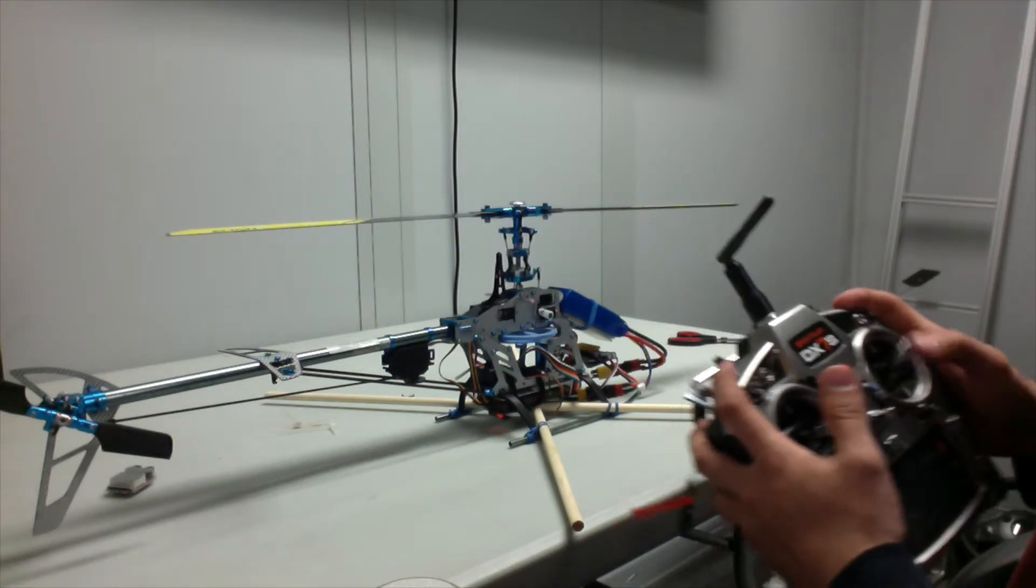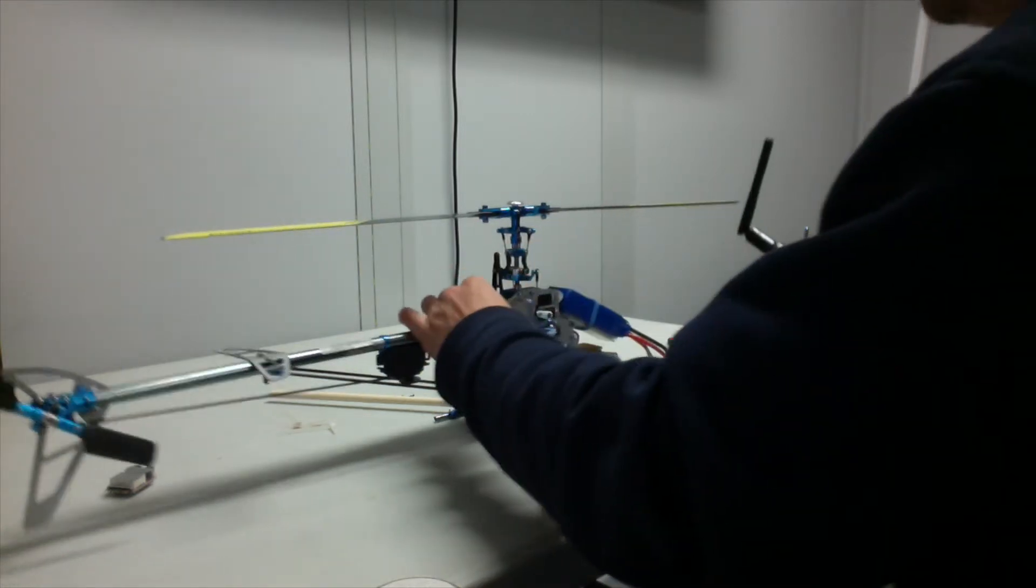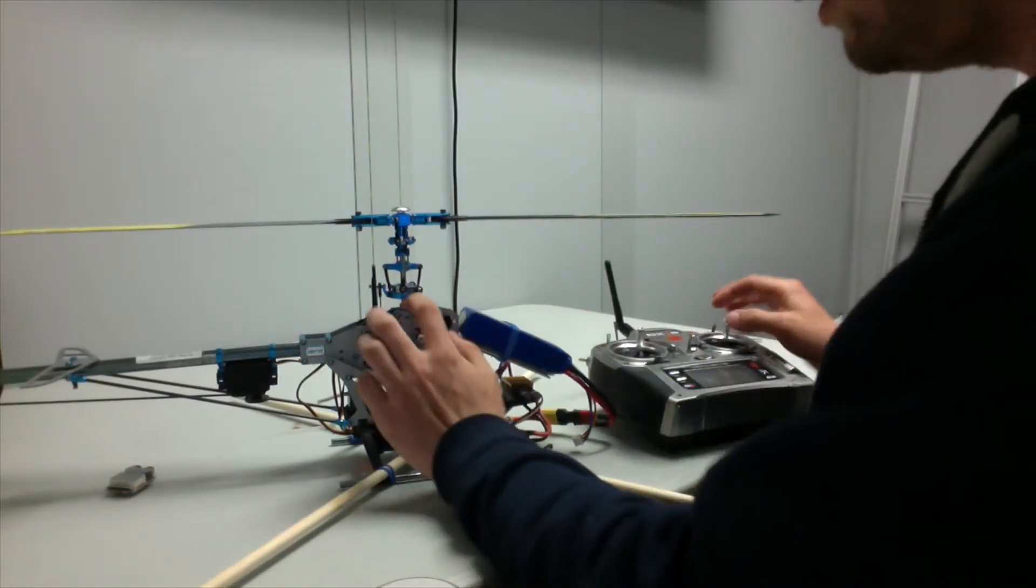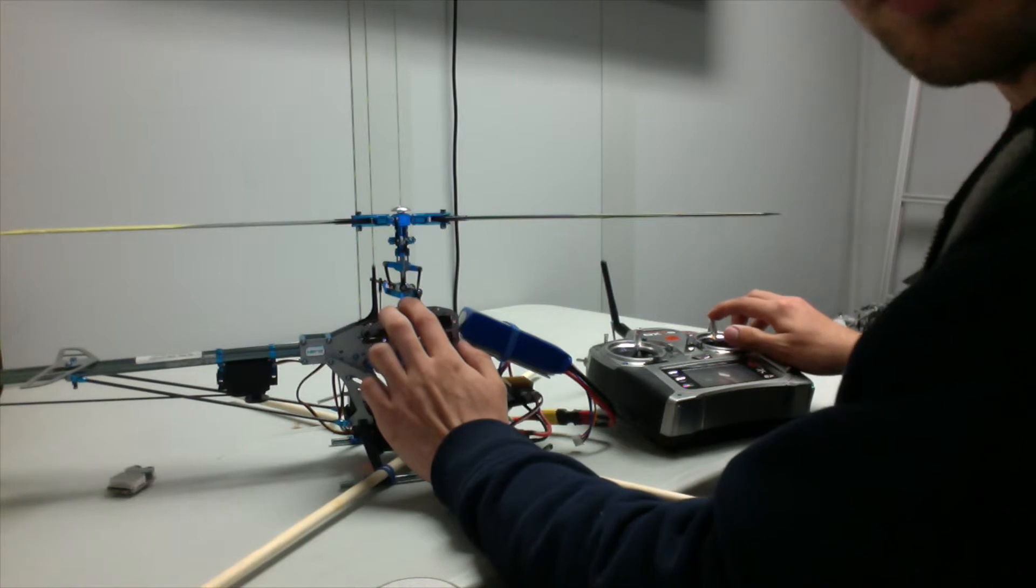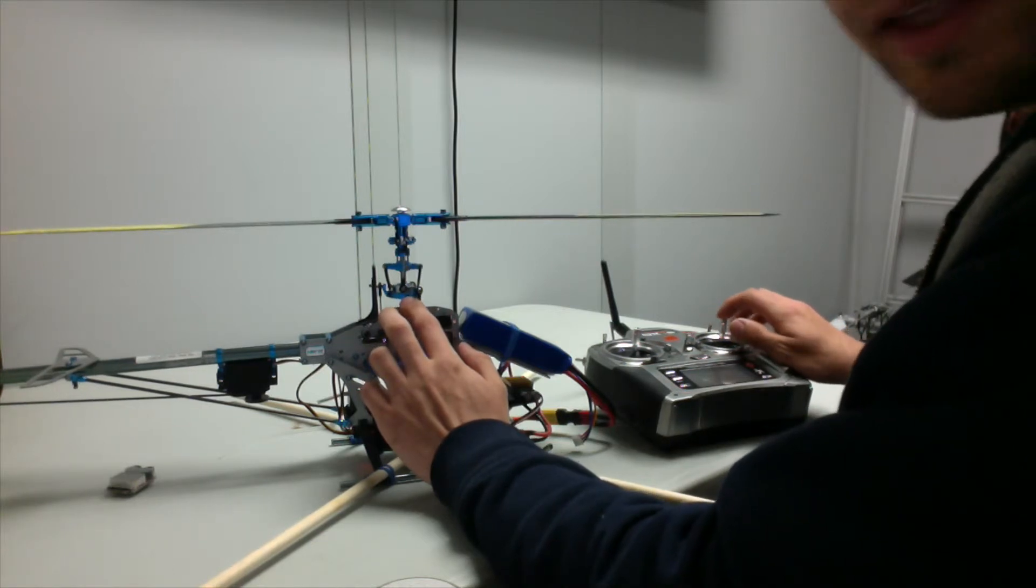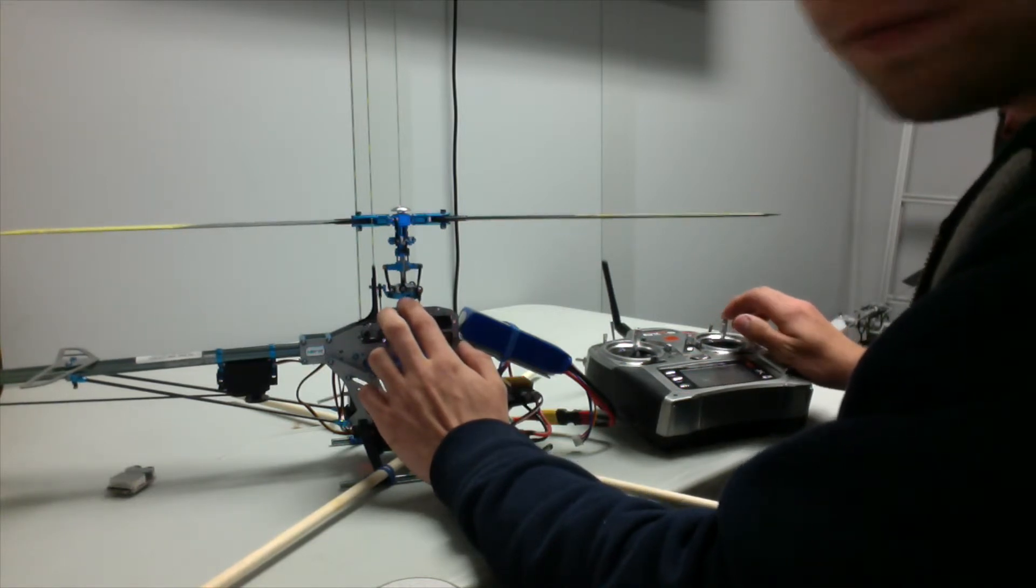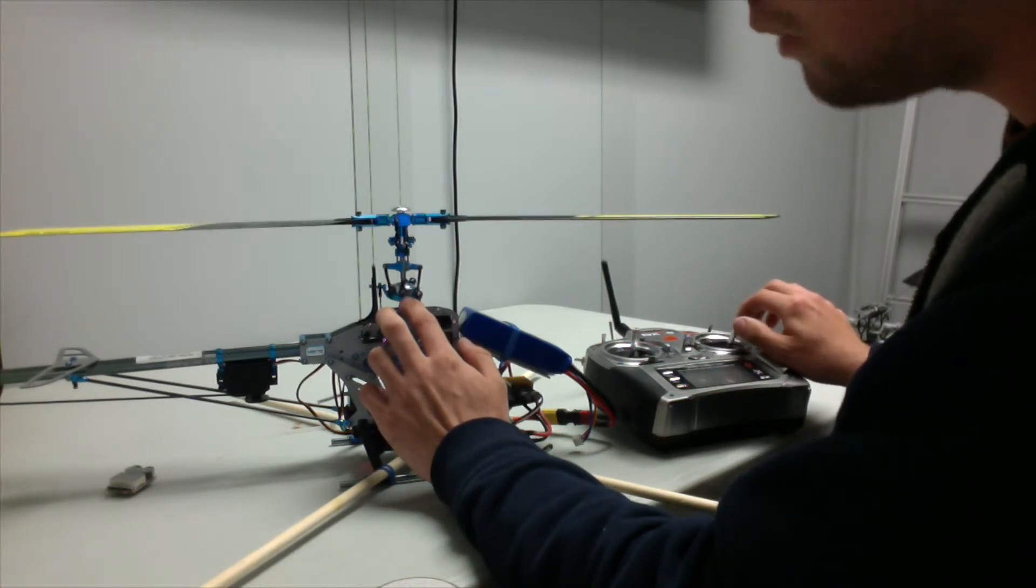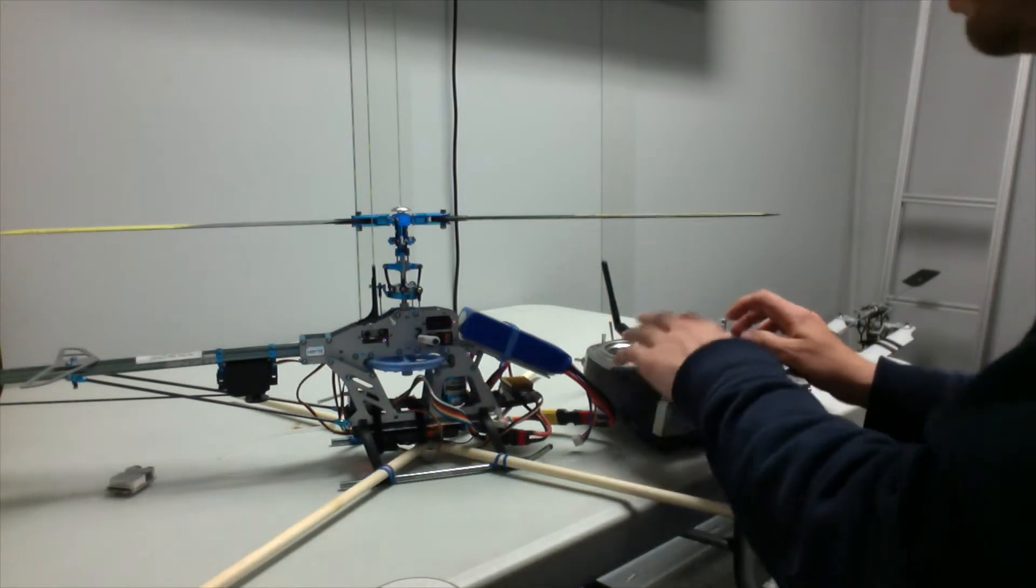Next, let's check our cyclic controls. Take a look at our swash plate. If we push our right hand stick forward, the swash plate should tilt forward. If we push it back, the swash plate should tilt back. If we push it to the left, it should tilt left. If we push it to the right, the swash plate should tilt right. That's pretty straightforward.